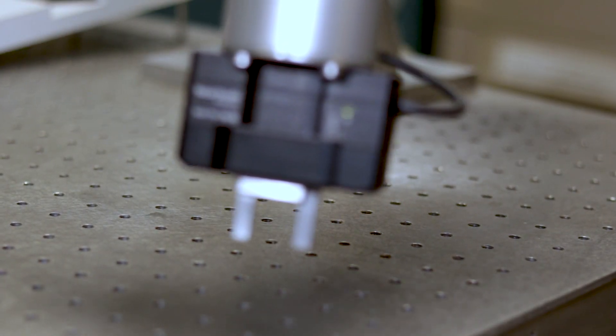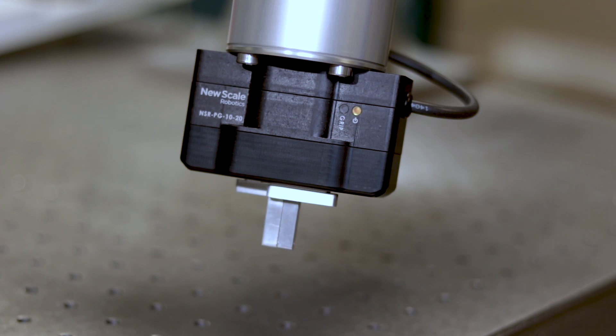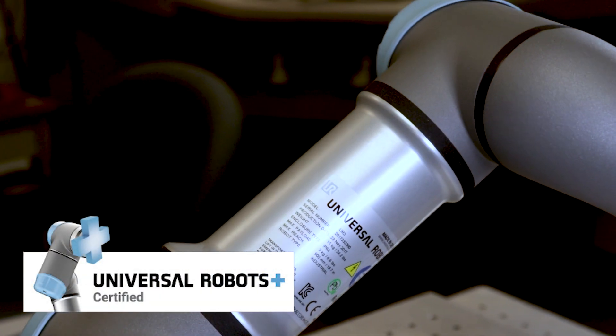NewScale Robotics is proud to introduce the NSRPG, the smallest, most precise electric parallel gripper that plugs and produces on the Universal Robots collaborative robot.